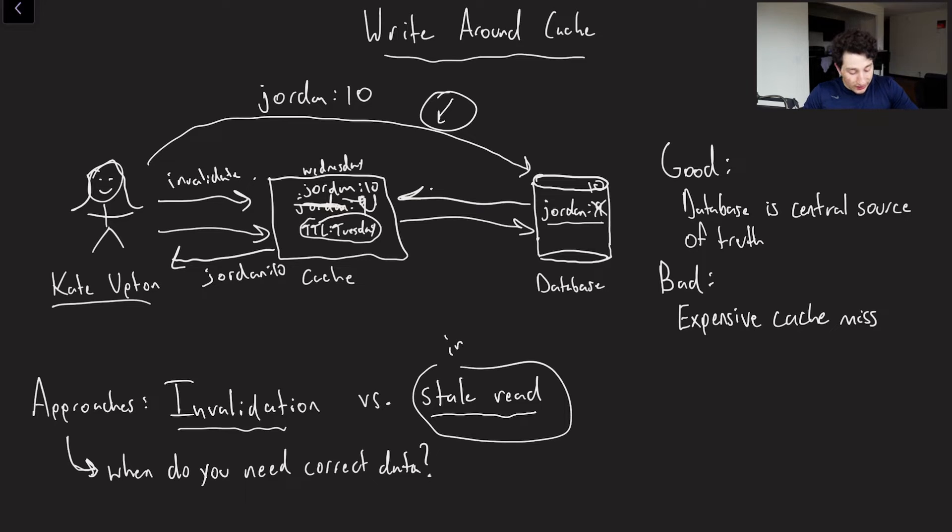So you can see that in the case of the stale read, it's a matter of incorrect data. In the case of invalidation, we'll get the updated write. And so, of course, you have to make the tradeoff of when do you actually need correct data? Is it okay to make a write and then not instantly see it? That, of course, is use case dependent.